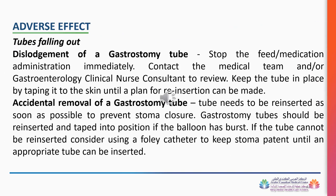Dislodgement of a gastrostomy tube: stop feed and medication administration immediately, contact the medical team and/or gastroenterology clinical nurse consultant to review, and keep the tube in place by taping it to the skin until a plan for reinsertion can be made. Accidental removal of a gastrostomy tube: the tube needs to be reinserted as soon as possible to prevent stoma closure. Gastrostomy tubes should be reinserted and taped into position if the balloon has burst. If the tube cannot be reinserted, consider using a Foley catheter to keep the stoma patent until an appropriate tube can be inserted.